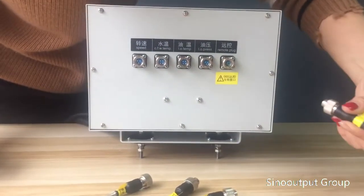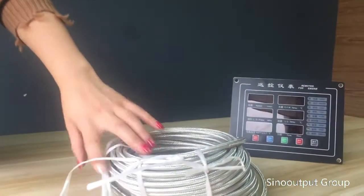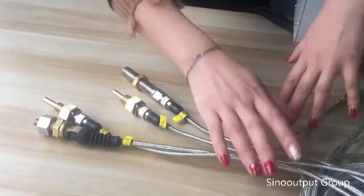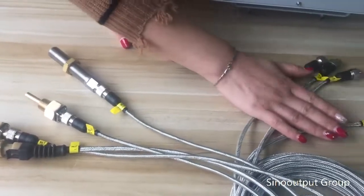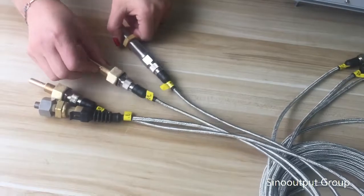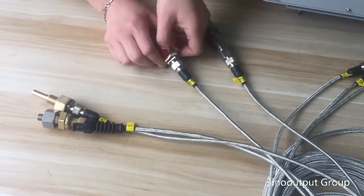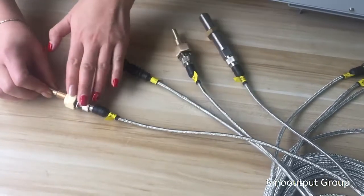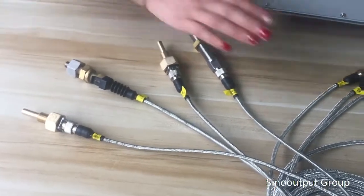Later I will introduce the display. Now focus on this one - these are the wires to connect. This is for connecting the remote monitor and this is for connecting with the engine for speed, voltage, oil temperature - just insert to the engine.